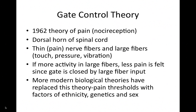Gate control theory gets into pain reception — sometimes sensation and perception, sometimes other areas, depending on your textbook. It's a 1962 theory of pain, or nociception. The idea is that pain exists around the dorsal horn of the spinal cord, and there are thin or pain fibers, and larger fibers sensitive to touch, pressure, and vibration. If there's more activity in the large fibers, less pain is felt, since the gate is closed by the large fiber input. This is an outdated theory; more modern biological theories have replaced it with the idea of pain thresholds involving factors of ethnicity, genetics, sex, and individual circumstances.